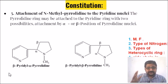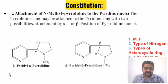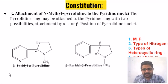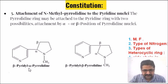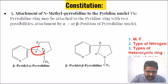Regarding the attachment of N-methylpyrrolidine to the pyridine nucleus: the pyrrolidine ring may be attached to the pyridine ring at two possible positions — either the alpha or the beta position.